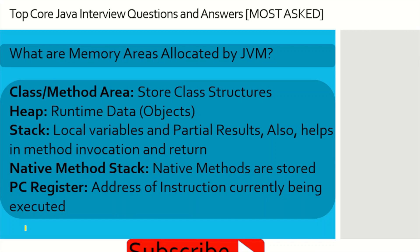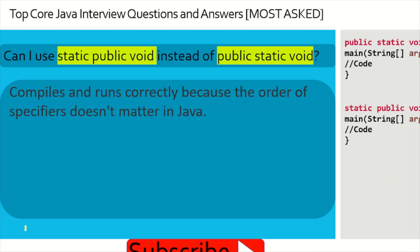What are the memory areas allocated by JVM? There are mainly five: first, Class/Method Area, which stores class structures and method code; second, Heap Memory, where all objects are created and runtime data is stored; third, Stack, which stores local variables, partial results, and helps with method invocation and return; fourth, Native Method Stack, where native methods are stored; and fifth, PC Register, which stores the address of the instruction currently being executed.